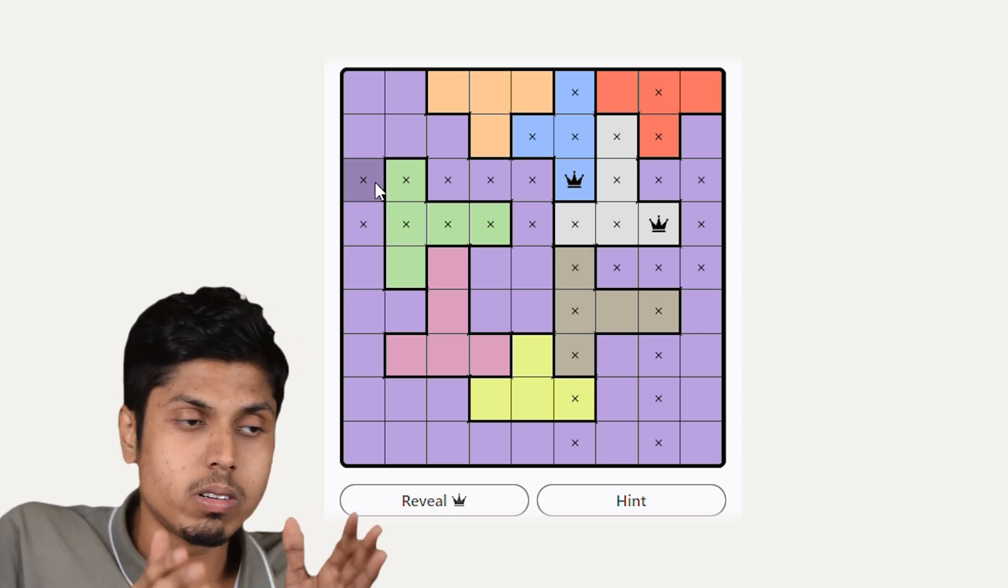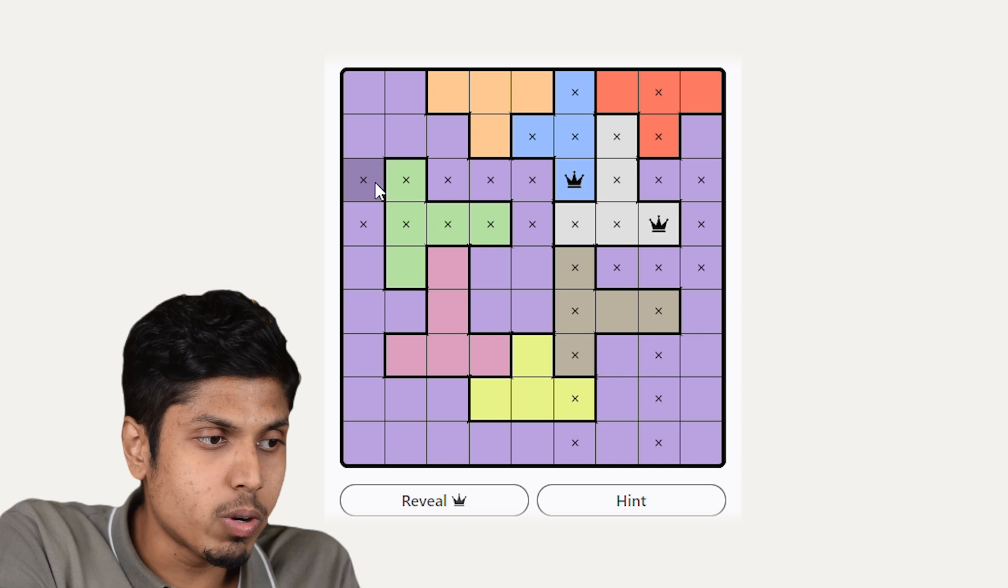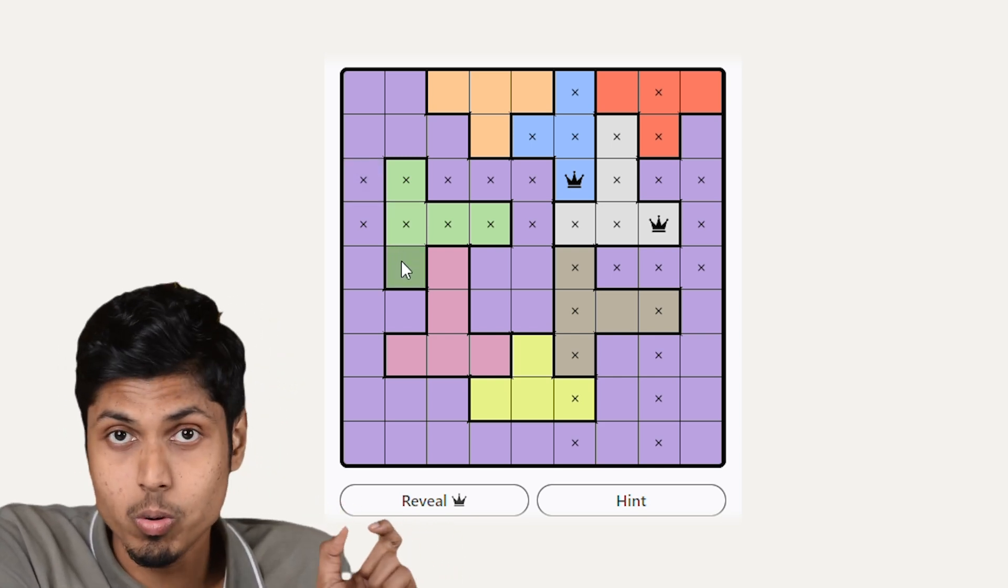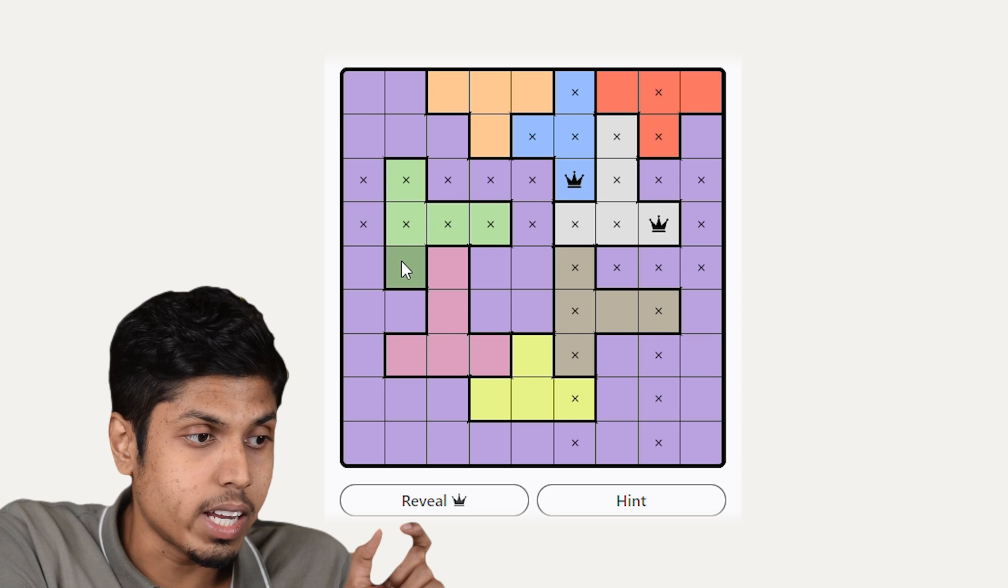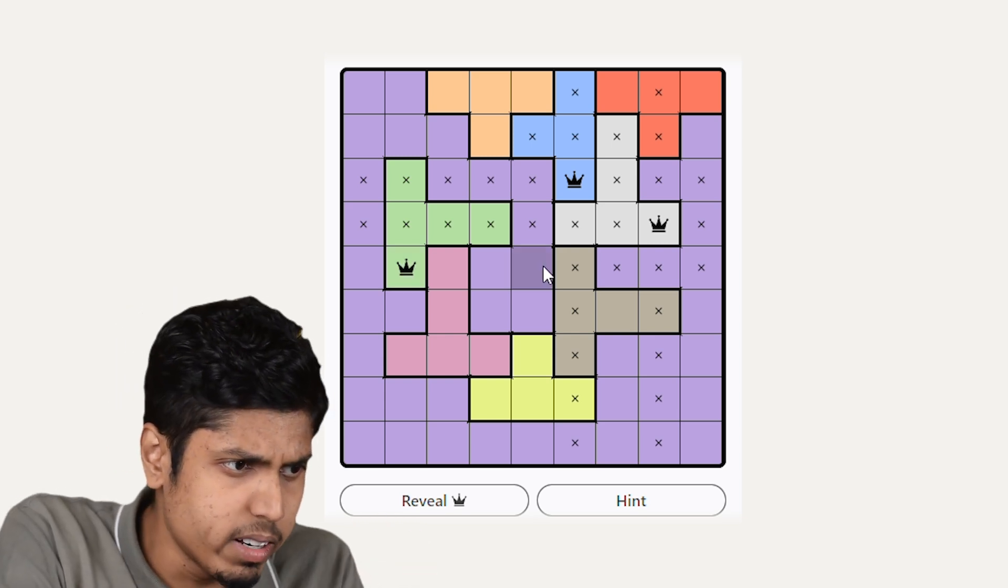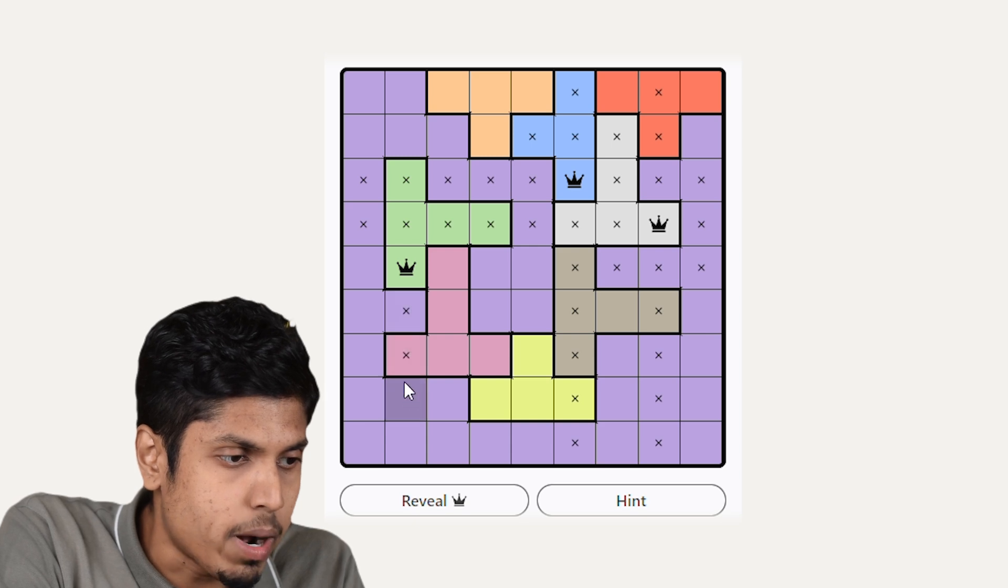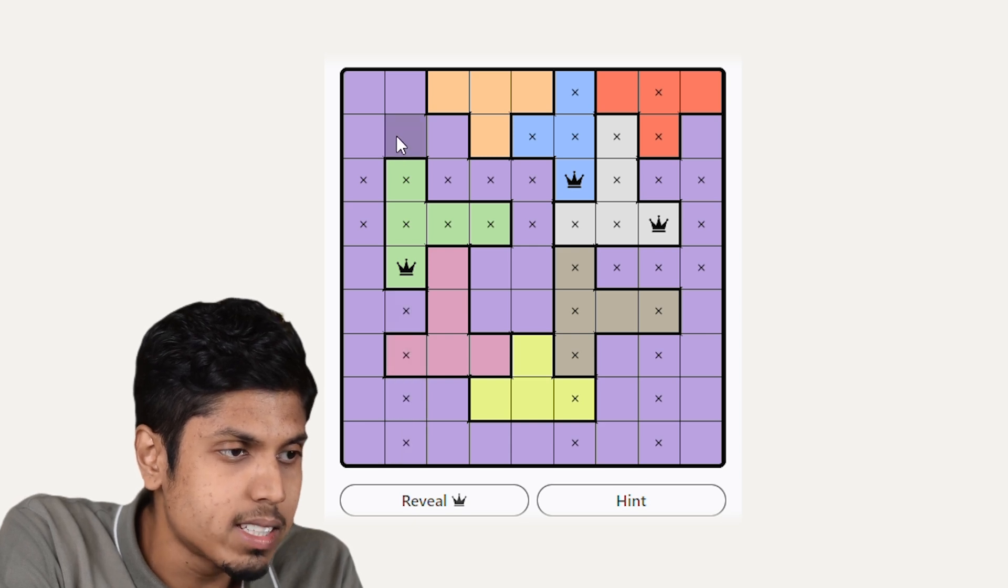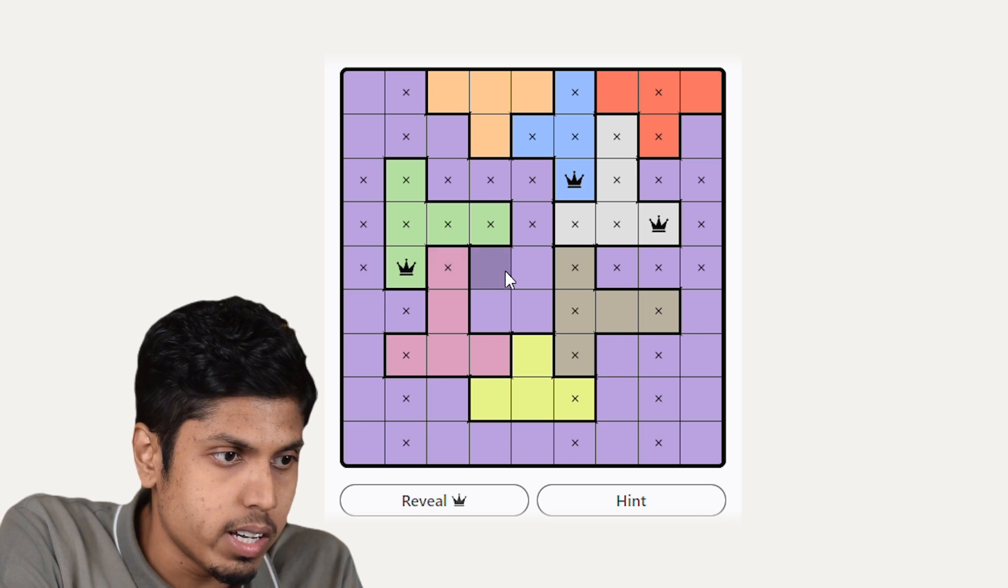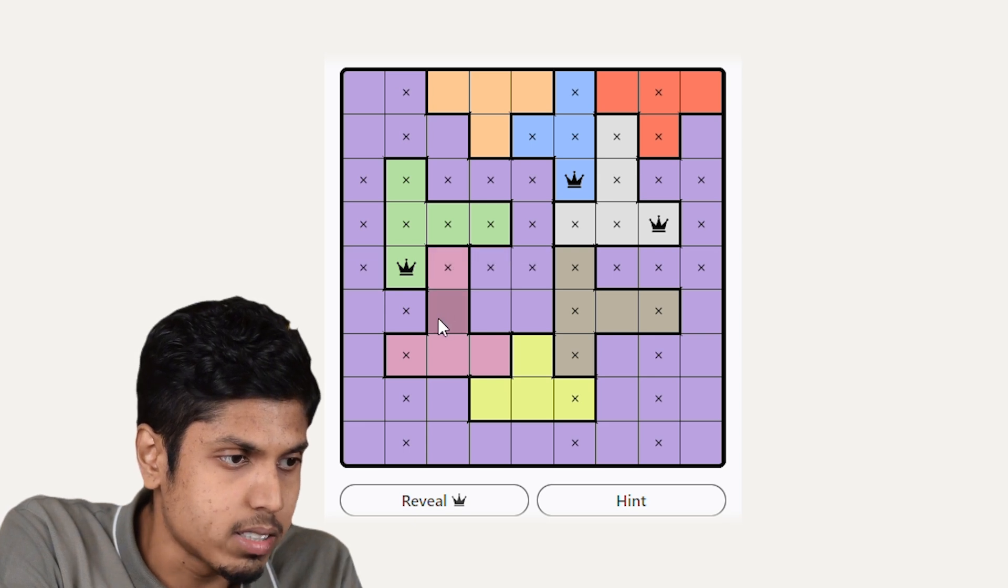Coming to the green region, we can see only one unit square remaining and we have to place the crown over there. So now we are done with the green region. Let's mark all the corresponding cells in the column and row with cross, and of course the adjacent squares.